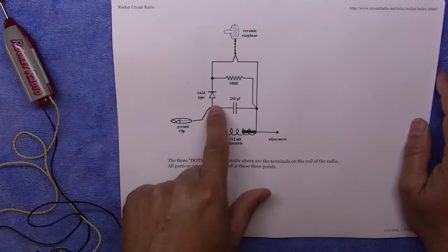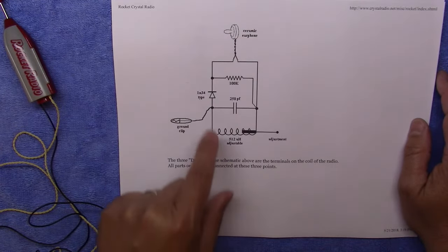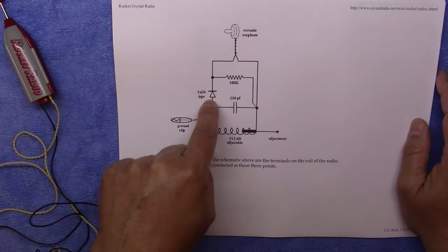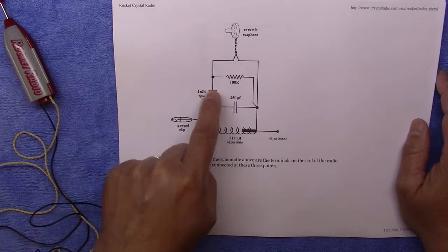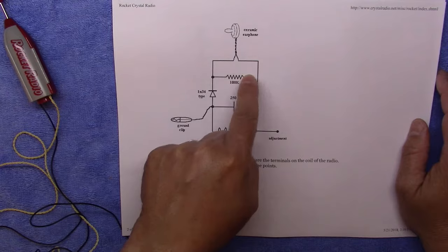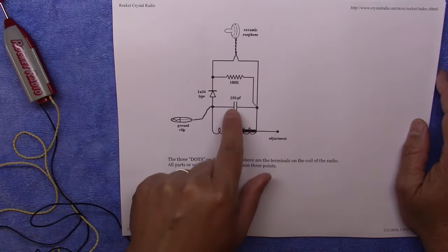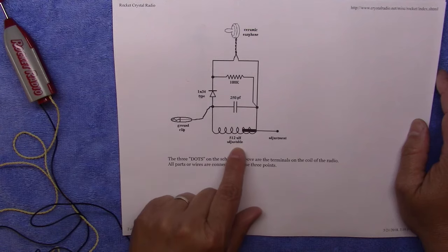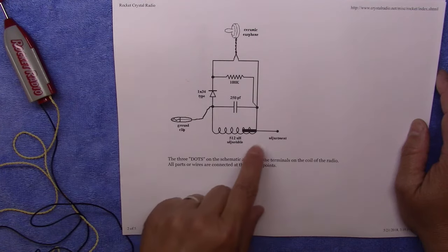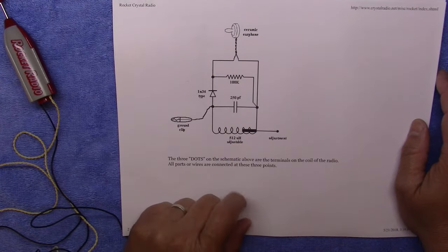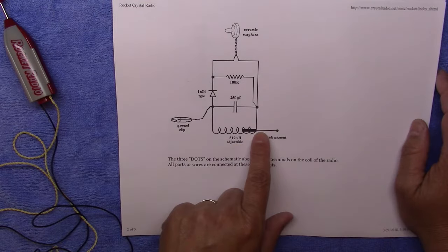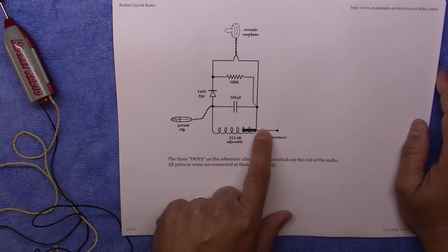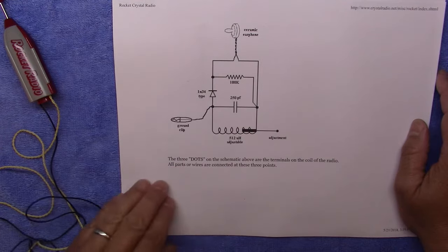And you can see you just have a ground clip here. The 1N34 type diode here. A resistor says 100k and a capacitor of 250 picofarads. And it says that the inductor is 512 microhenries and it's adjustable. And then it shows you the slug here that you're pushing in and out with that rod.